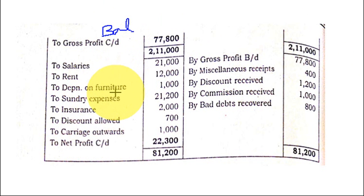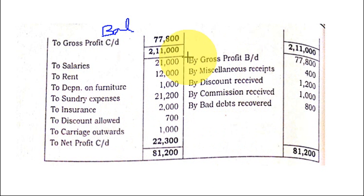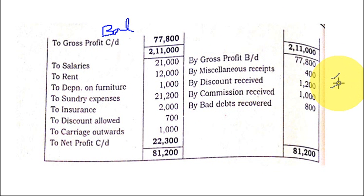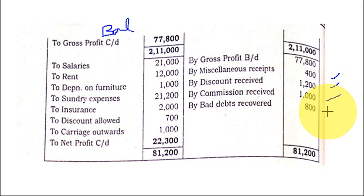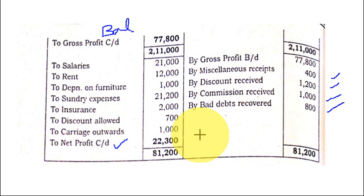Then gross profit is brought down to the Profit and Loss account. On the debit side, all expenses: salaries, rent, depreciation on furniture, sundry expenses, insurance — prepaid insurance we are not taking here because it goes directly to the balance sheet — discount allowed, and carriage outwards. On the credit side, all incomes: miscellaneous receipts, discount received, commission received, and bad debts recovered. Total of both sides is 81,200 and the balancing figure is net profit, which is transferred to the balance sheet.